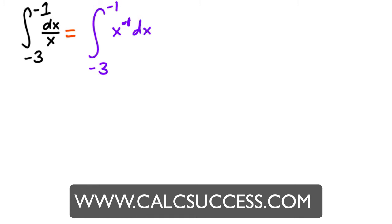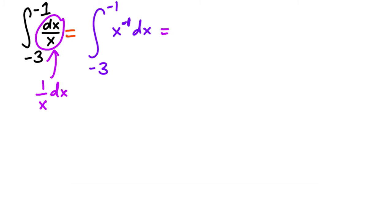But then you remember: dx over x is the same as 1 over x dx, and the antiderivative of 1 over x is the natural log of the absolute value of x. Then you evaluate from negative 3 to negative 1.